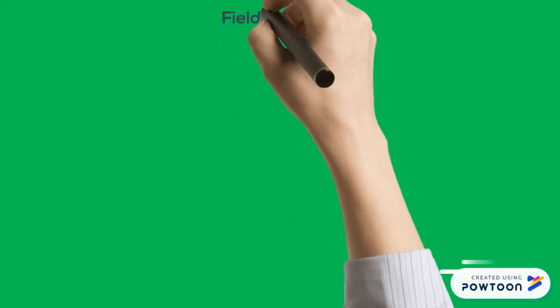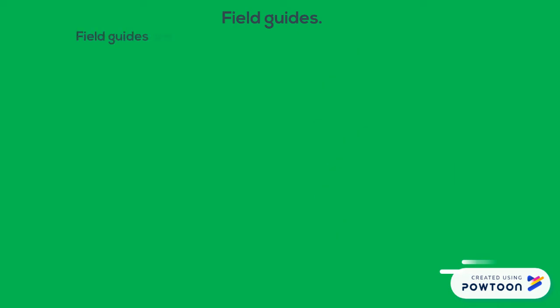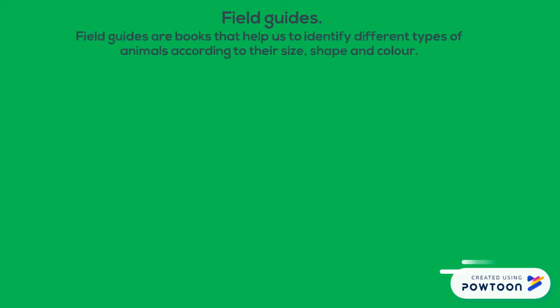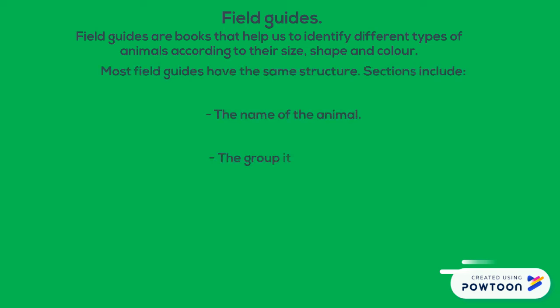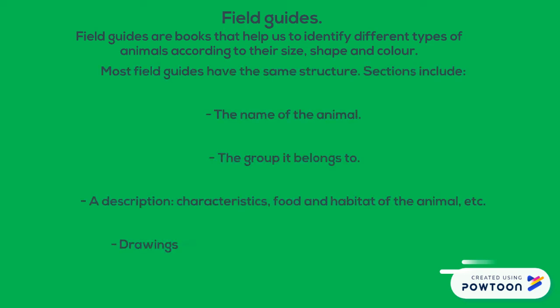Finally, field guides. Field guides are books that help us to identify different types of animals according to their size, shape and color. Most field guides have the same structure: the name of the animal, the group it belongs to, a description with the characteristics, food and habitat of the animal, and drawings and photos to help you recognize the animals.